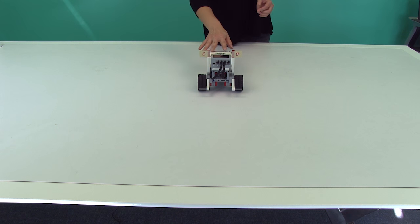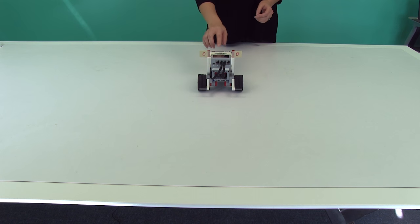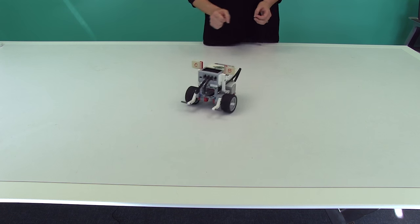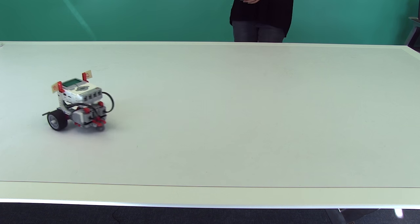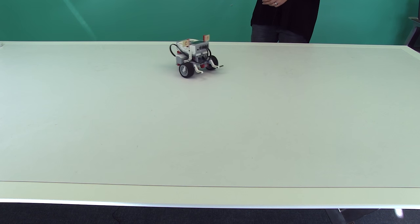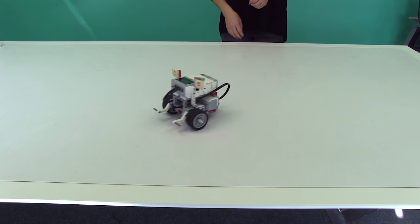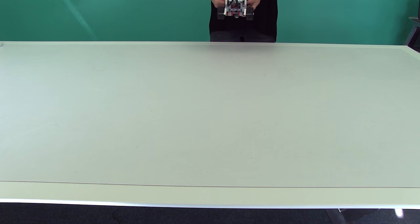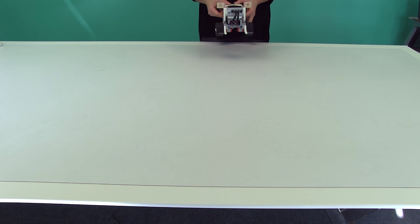I'm just going to quickly demonstrate what I'm expecting for the homework. So first, I'll demonstrate the circle program. Again, this is going to be the car driving in a circle that's about two feet in diameter. So for this one, you're going to have to experiment with the different power settings on the Move Tank commands.